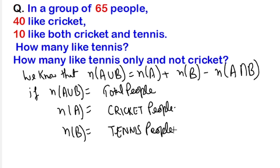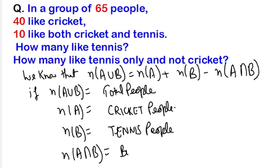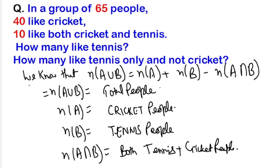n(A∩B), as per the formula, is the number of people who like both tennis and cricket. The people who have both choices of tennis and cricket — those numbers are represented as n(A∩B).